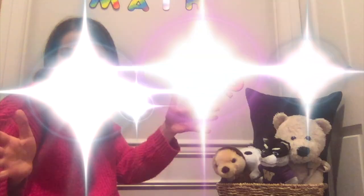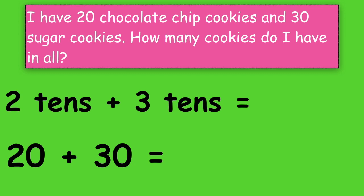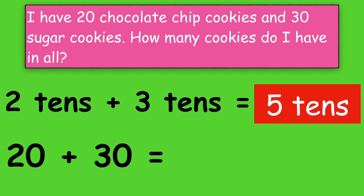Now that we've practiced adding groups of 10, let's try adding a story problem. Here is my story problem: I have 20 chocolate chip cookies and 30 sugar cookies. How many cookies do I have in all? Pause the video and write your answer down, and make sure you show your work. We can use what we know about adding ones to find our sum. If I know that 2 tens plus 3 tens is equal to 5 tens, then I know that 20 plus 30 is equal to 50.